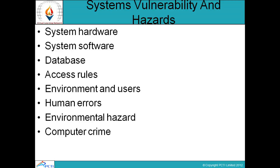System hardware: IS has a risk of being attacked through its hardware. Any failure of a hardware protection mechanism can be a security threat. System software: failure in software protection is also a risk for IS. Low or no protection can result in information leakage or manipulation.